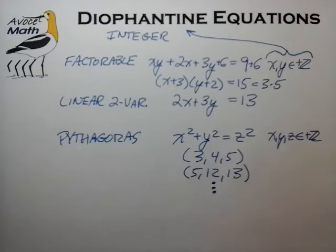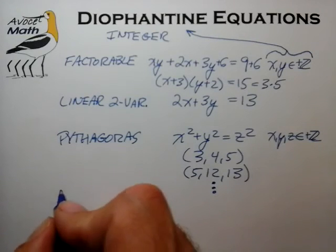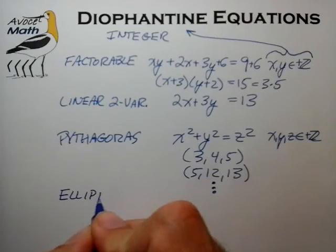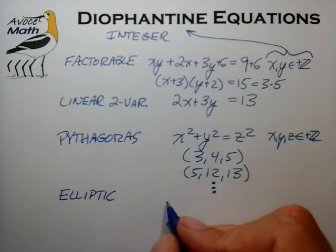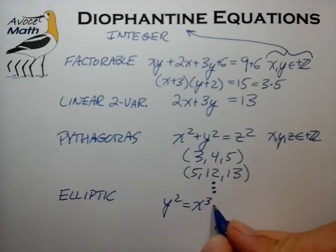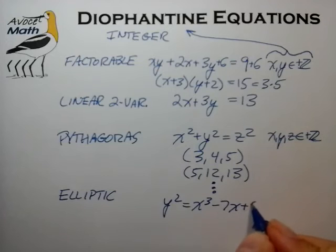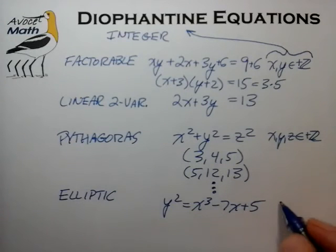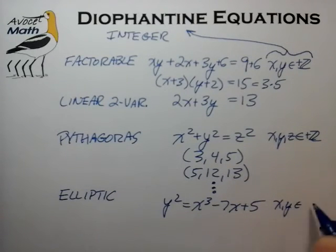The final equation form I'd like to mention, which we're not going to talk about in great detail, is what's called an elliptic equation. It's of the form, for example, y² = x³ - 7x + 5, where we're trying to solve for x and y in the integers. Often with this type of equation, we try to extend the solutions to the set of rational numbers, which we denote by Q. I mention this equation type as a reference point.